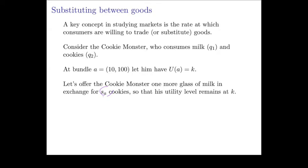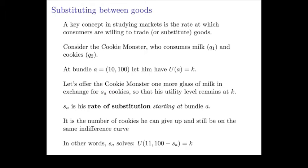We want to do it in a way where Cookie Monster's utility remains at K. So we're offering him this trade of one more glass of milk in exchange for SA cookies in a way that doesn't make him any worse off or better off. SA is Cookie Monster's rate of substitution at the bundle A — it's the number of cookies he's willing to give up in order to get one more glass of milk.